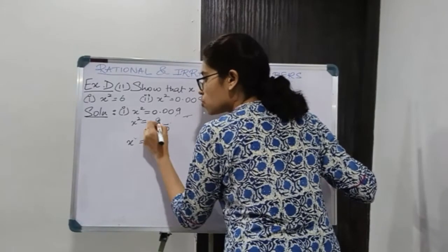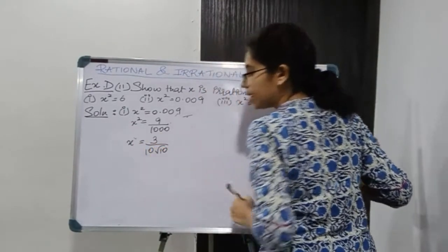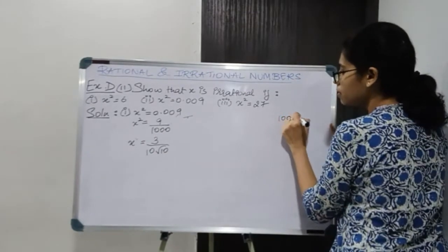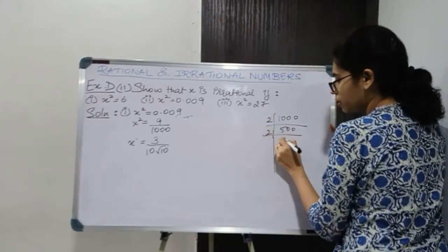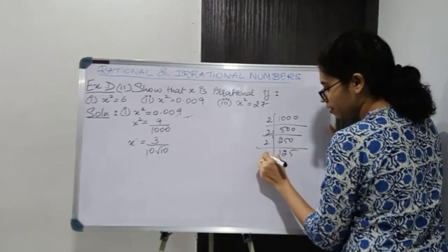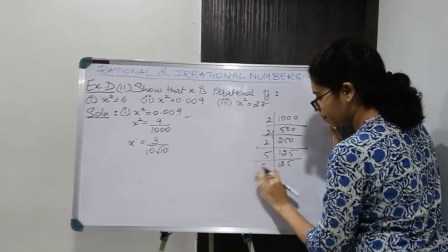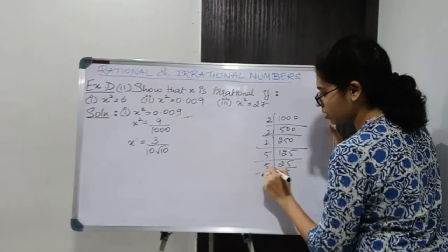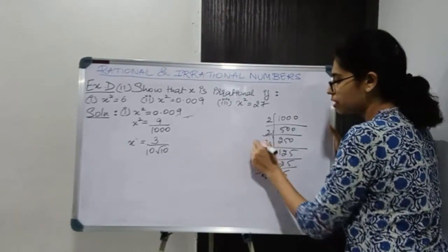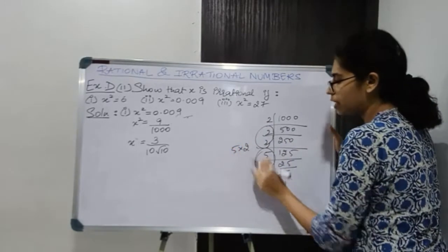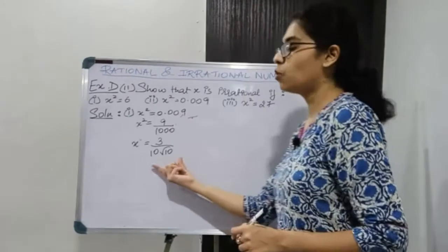So x is going to be square root of 9, that is 3, and square root of 1000 will give 10 root 10. If you factorize 1000, you get 2 × 500, 2 × 250, 2 × 125, 5 × 25, 5 × 5, 5 × 1. Making groups of 2, we get 5 × 2 outside the root, which gives 10 root 10. So over here we will get x equal to 3 upon 10 root 10.